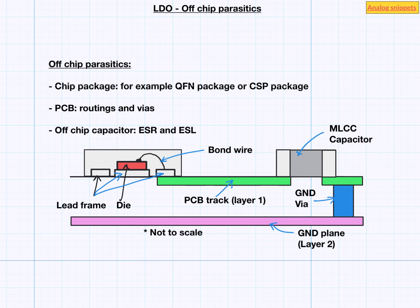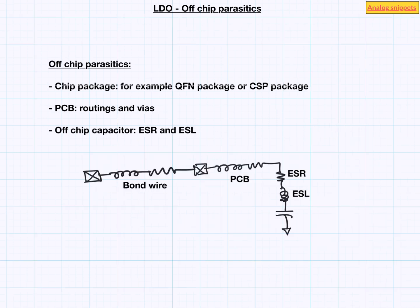So let's build a lump model of these parasitics. Bond wire is modeled here, this is the PCB and this is the off chip capacitor. Notice that we haven't modeled the ground return path here and this is because I am modeling the whole loop inductance here.